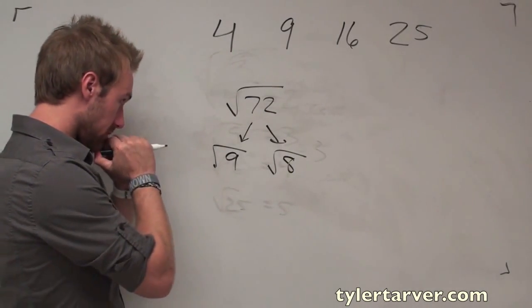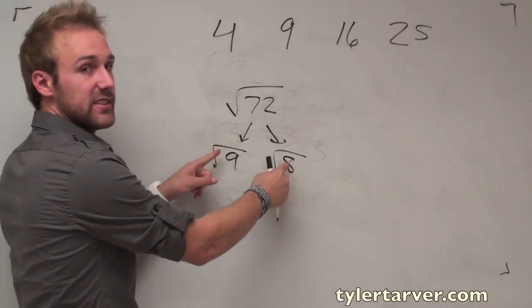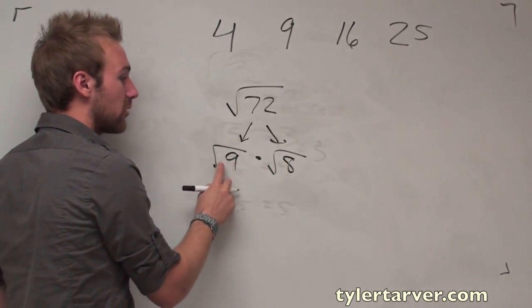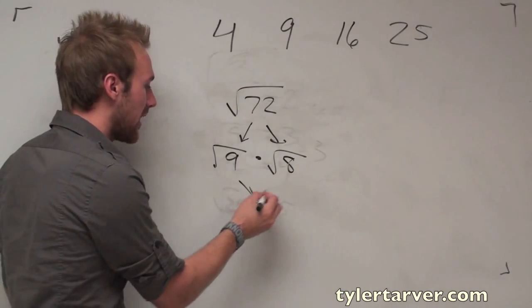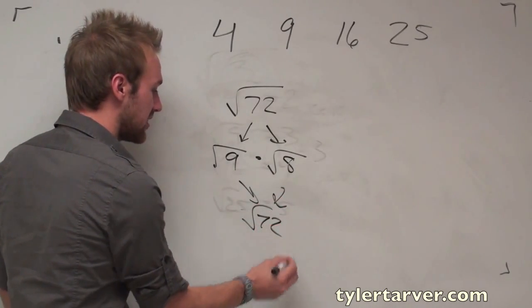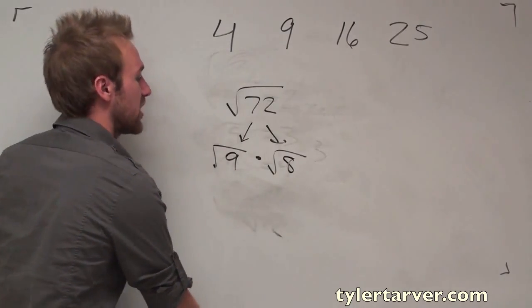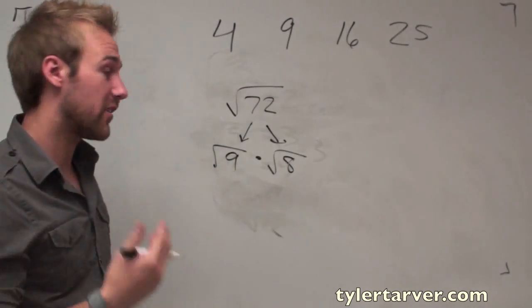Now, I can split these up because it does not change the problem. It's like saying radical nine times radical eight, okay? I can always put them back together and say radical seventy-two. I did not change my problem, okay? I'm just changing what it looks like so that we can simplify the radical.